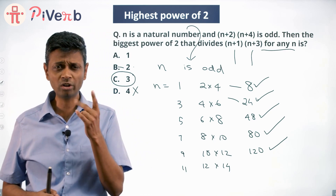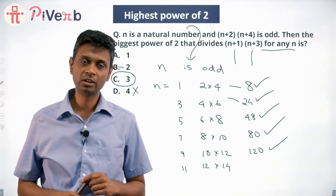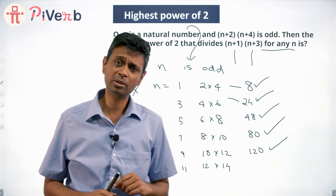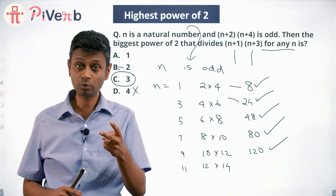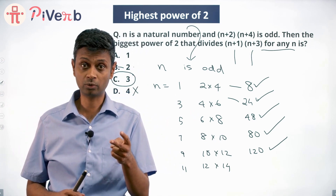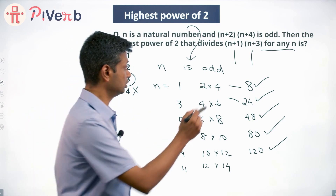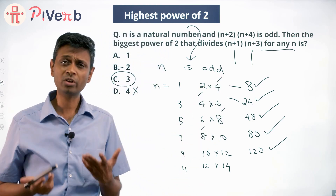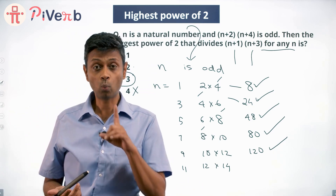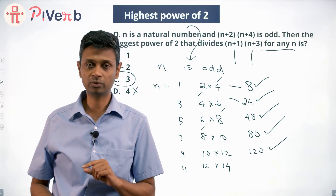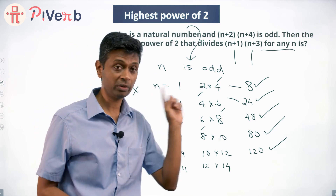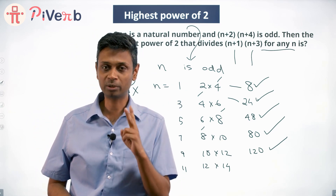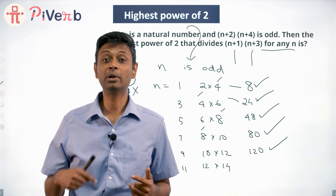For any two consecutive even numbers, one of them always has to be a multiple of 4. Look: 2 and 4 — 4 is a multiple of 4. 4 and 6 — 4 is a multiple of 4. 6 and 8 — 8 is a multiple of 4. So any two consecutive even numbers, one is always a multiple of 4. When you multiply them, there's one multiple of 2 and one multiple of 4, so the product will always be a multiple of 8.